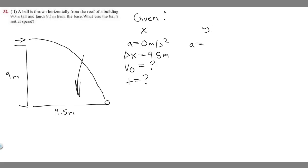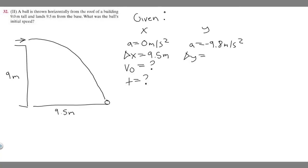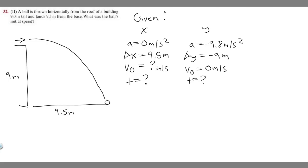In the y direction, acceleration is minus 9.8 meters per second squared because that's the force of gravity acting on the ball. Delta y is our final position minus our starting position: zero minus nine equals minus 9 meters. V sub zero in the y direction is basically always zero meters per second unless specified differently, and time is also unknown — question mark.